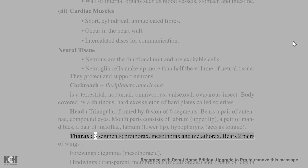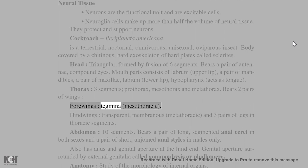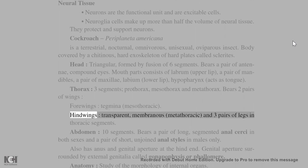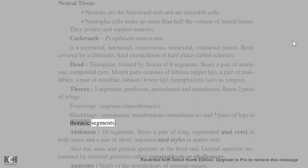The thorax has three segments: prothorax, mesothorax, and metathorax. It bears two pairs of wings — forewings (tegmena, mesothoracic) and hind wings (transparent, membranous, metathoracic) — and three pairs of legs in the thoracic segments.